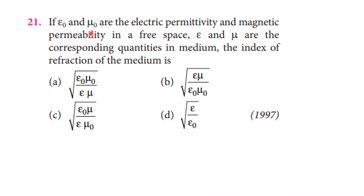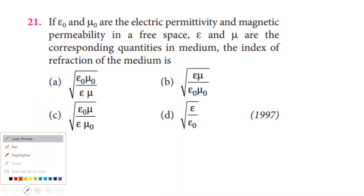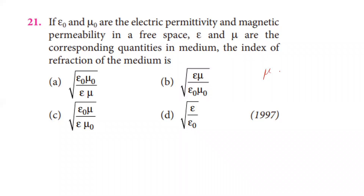Electromagnetic waves. If epsilon-naught and mu-naught are the electric permittivity and magnetic permeability in free space, and epsilon and mu are the corresponding quantities in a medium, the index of refraction of the medium is given by the refractive index formula. The refractive index n is equal to the speed of light in vacuum divided by the speed of light in the medium.